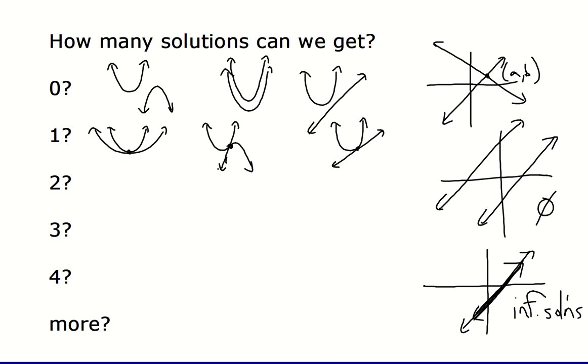We could have two solutions, which is what we've had in the examples that we've done, whether or not both parabolas are facing the same direction and we end up with two solutions. Or if the parabolas are facing opposite directions, we could end up with two solutions. We can end up with two solutions with a parabola and a straight line as well.